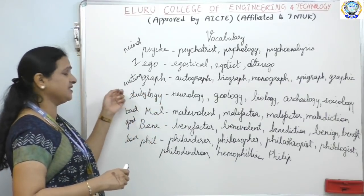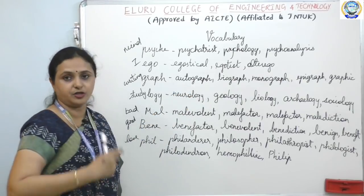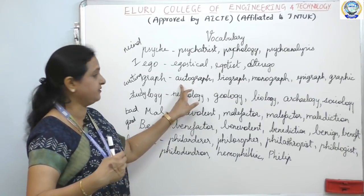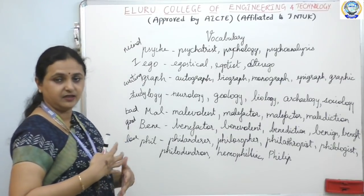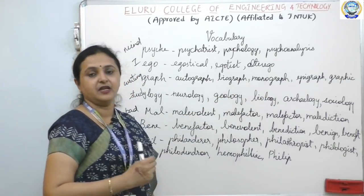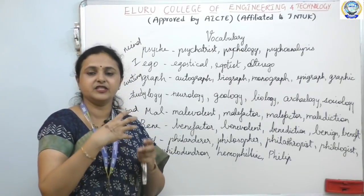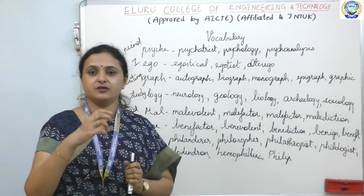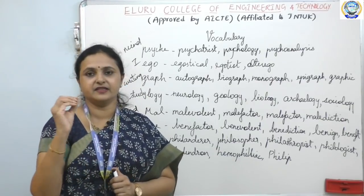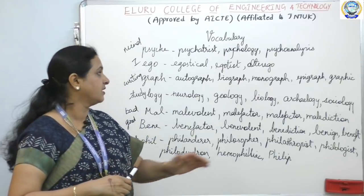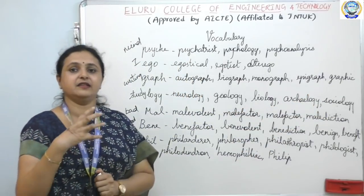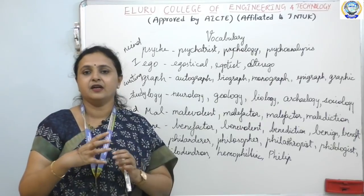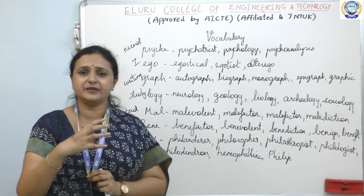Graph means writing. So: autograph — 'auto' is by oneself, so when you write by yourself, it's autograph. Biography — 'bio' is life. Monograph — a single writing. Epigraph — the wording written on one's tomb. Graphic details means very clear, picturesque details.